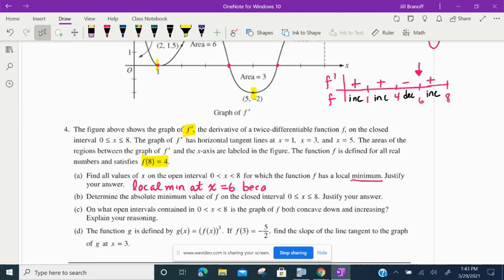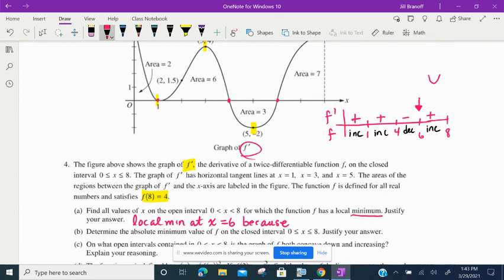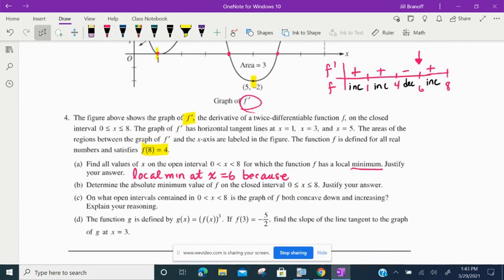Now, because, first of all, just writing that chart, even if it's labeled beautifully, is no longer enough to justify. You must justify based on the given graph. The given graph is f prime, not f. So you have to say that you have a local minimum at x equals 6 because f prime goes from negative, I usually circle mine, negative to positive. All right, so that is part A, and for scoring on part A, it is worth one point if you give your answer with justification.